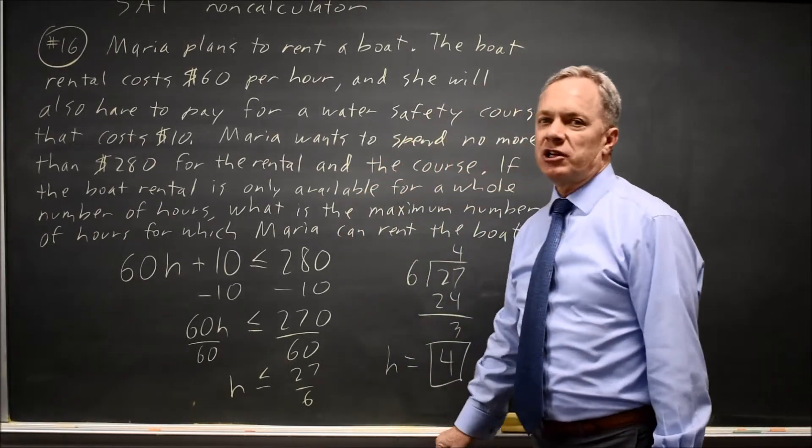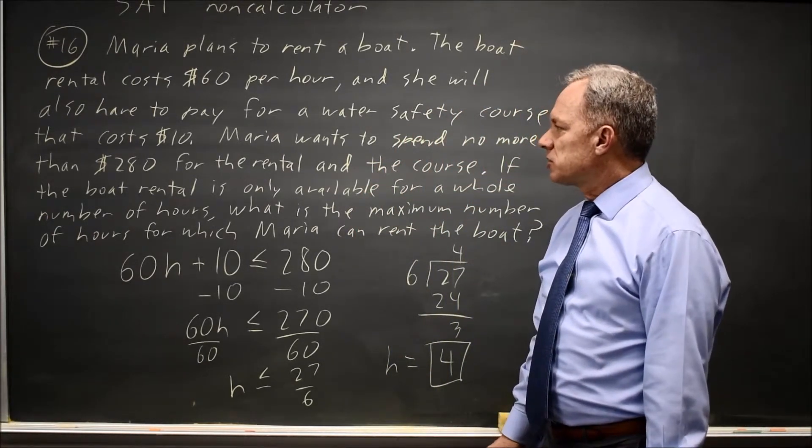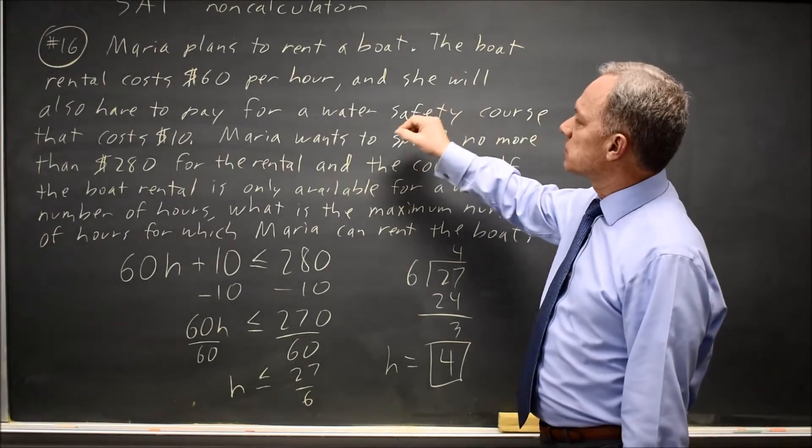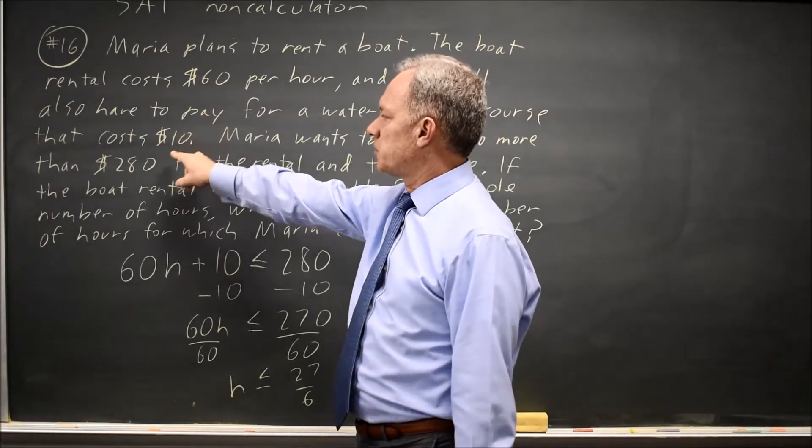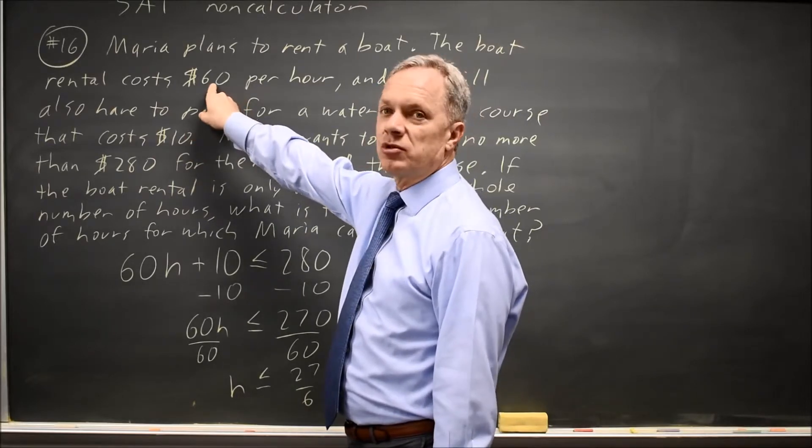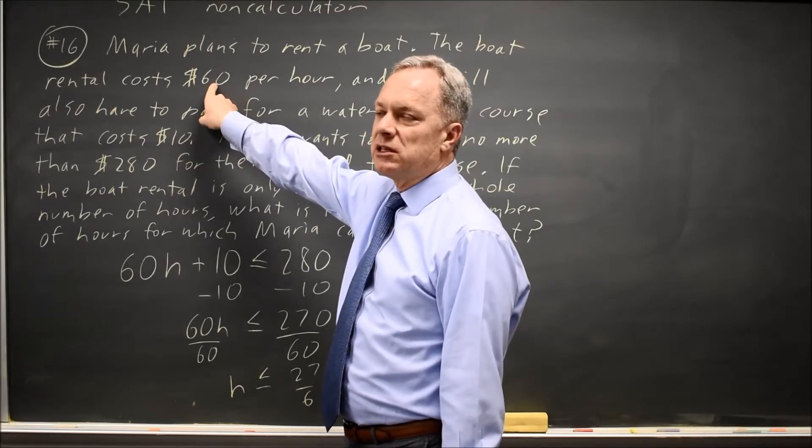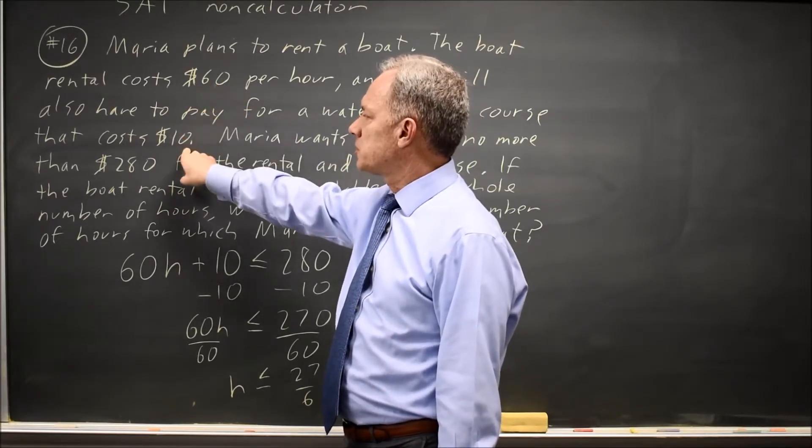Alternatively, you can just try a few numbers. At H equals 3, the rental is 3 times 60 is 180, plus 10 is 190, that's less. At H equals 4, the rental is 4 times 60 is 240, plus 10 is 250.